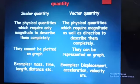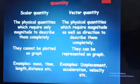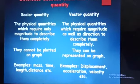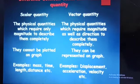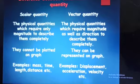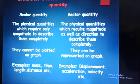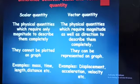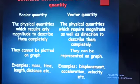Vector quantities are physical quantities which require both magnitude and direction to describe them completely. They can be represented on a graph. Examples of vector quantities include displacement, acceleration, and velocity. This is the basic difference between scalar quantity and vector quantity.